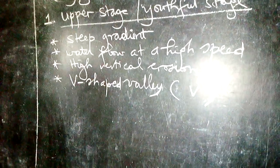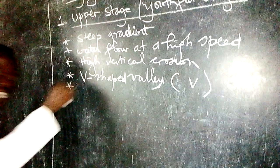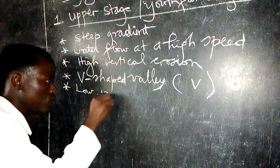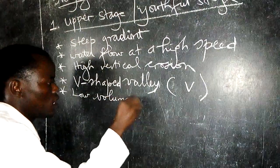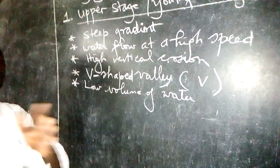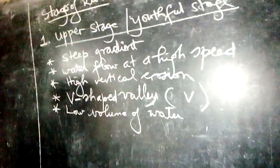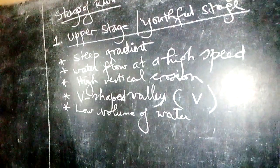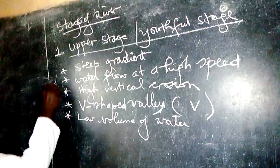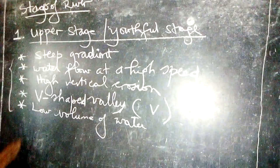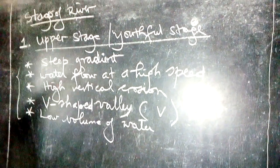Since the river is near its source, it has a low volume of water. The reason for this low volume is that there are no tributaries yet draining into that river, so the water remains at a low level. Those are the most important characteristics of the youthful stage.